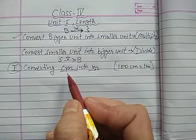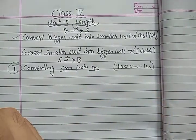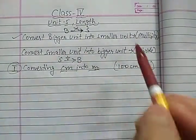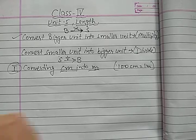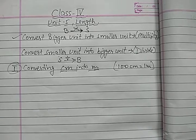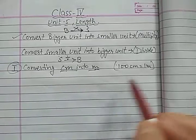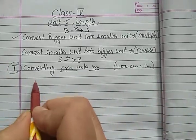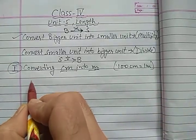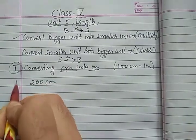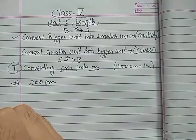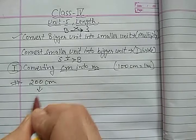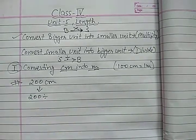So divide किसे करेंगे? जो इन दोनों के बीच में relation होगी. क्योंकि जब हम bigger to smaller unit कर रहे थे, तब हम multiply करते थे — multiply किसे करते थे? जो units के बीच में relation होती है. So here, 100 centimeters is equal to 1 meter. Let us take one example. Suppose 200 centimeters — you have to convert centimeters into meter. So what will you do? You will divide. इसको हम 100 से divide करेंगे.